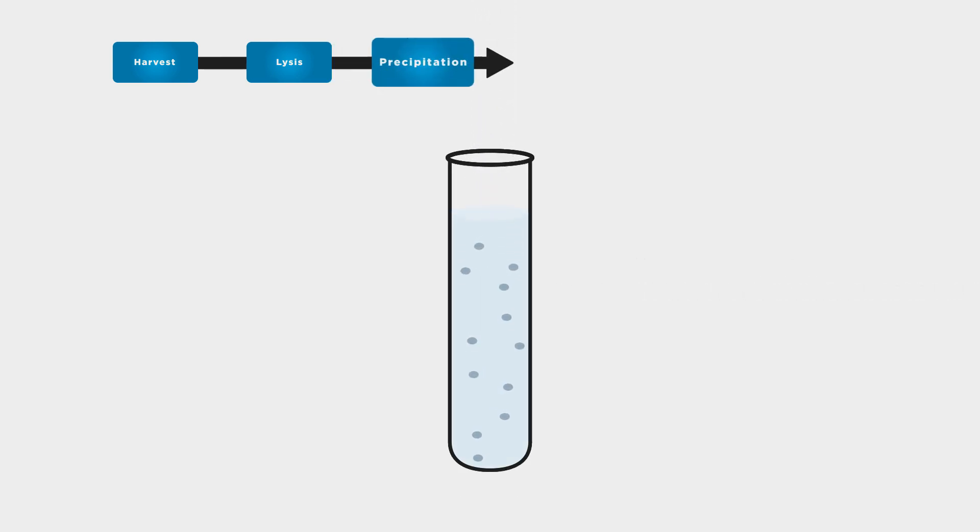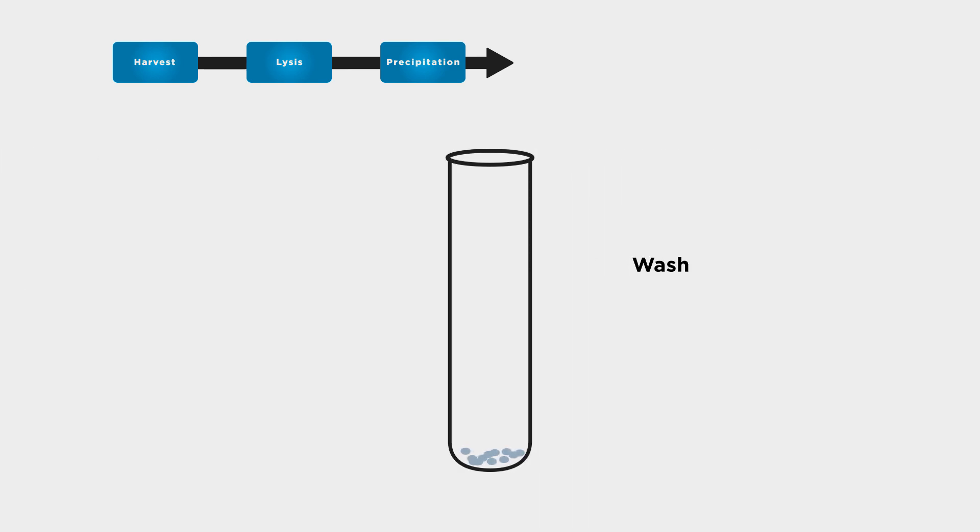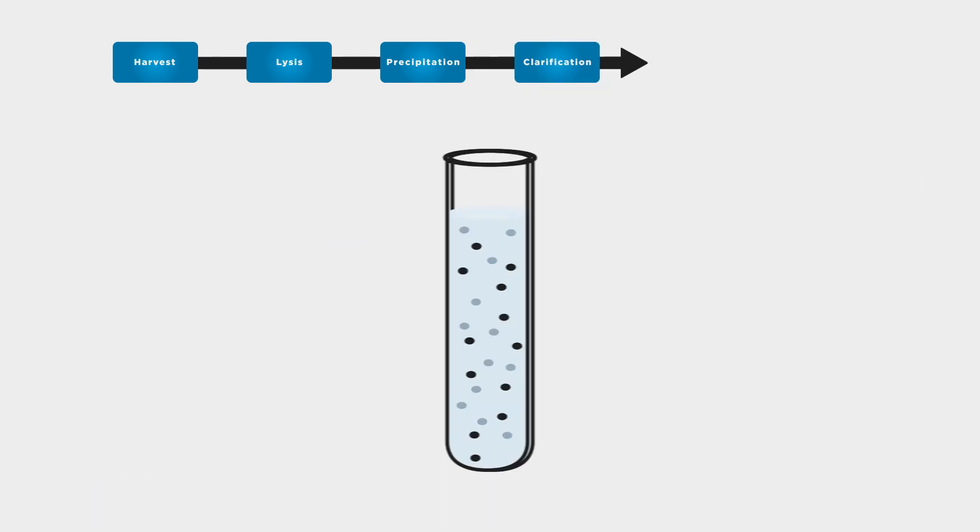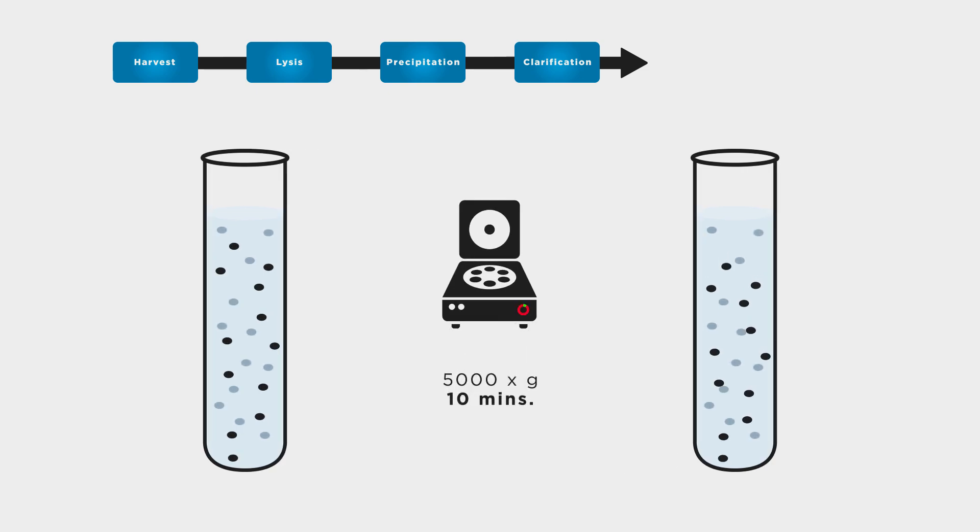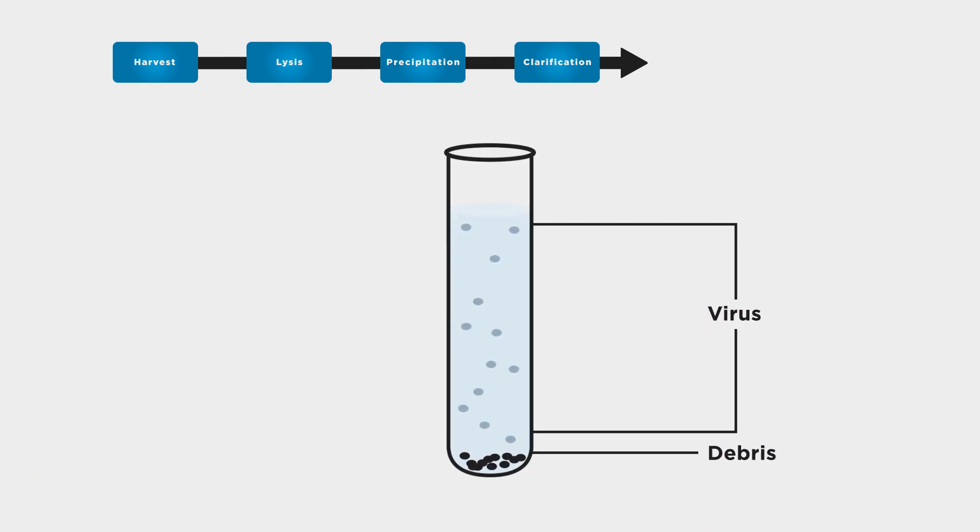Viral particles can be precipitated from the supernatant using polyethylene glycol, followed by low-speed centrifugation. This creates a pellet containing viral particles. Wash the pellet with sodium benzoate. The pellet is resuspended and centrifuged again to further clarify the viral mixture from cellular debris and other chemicals from the previous steps. The viral mixture is now contained in the supernatant.